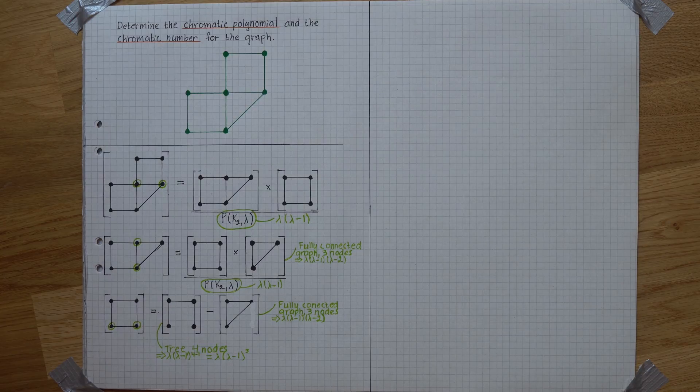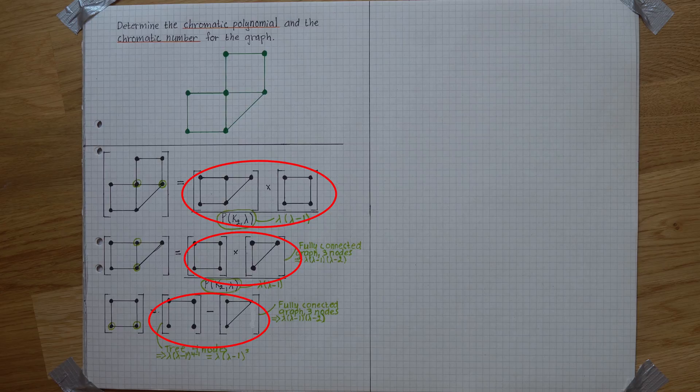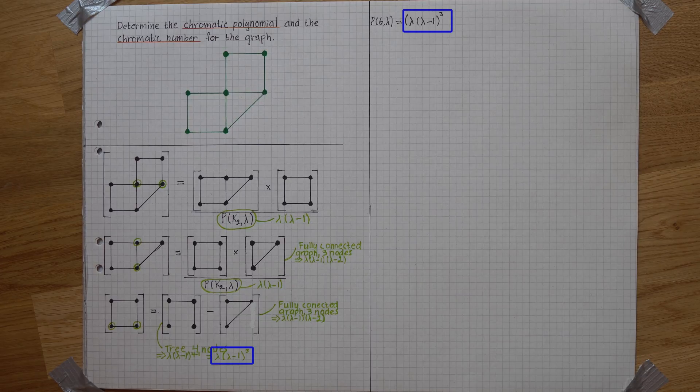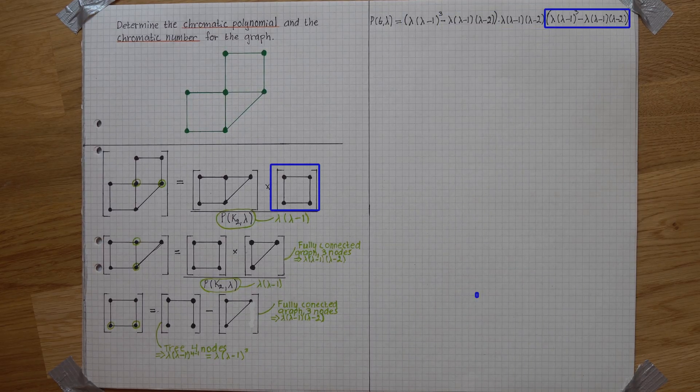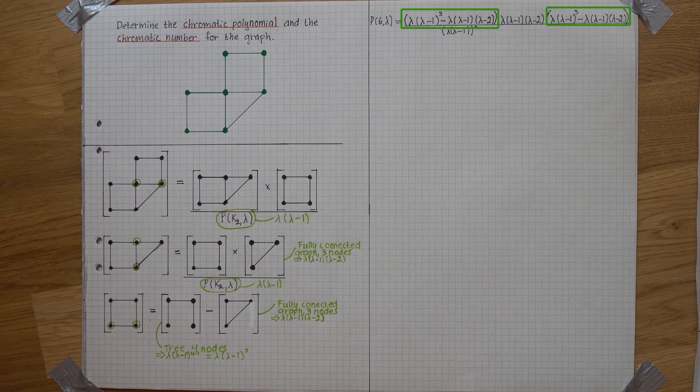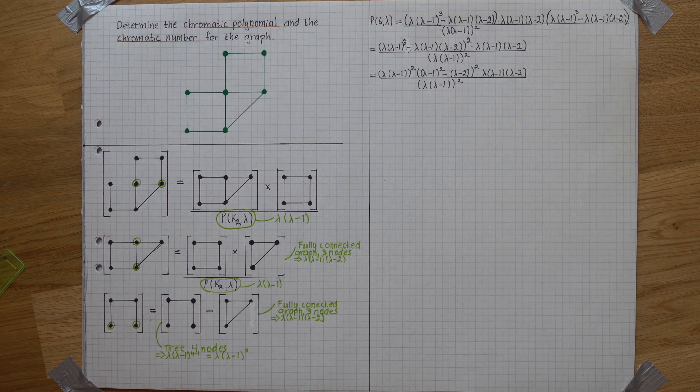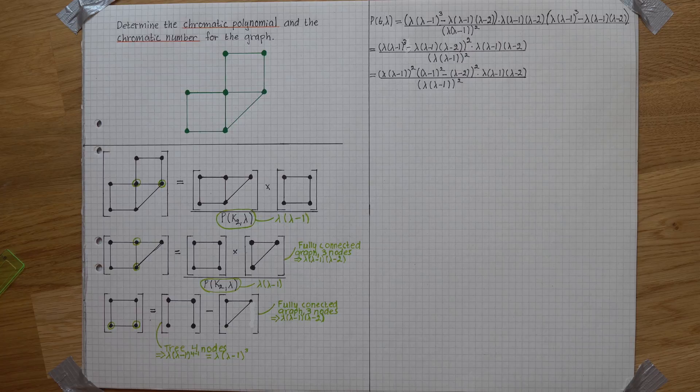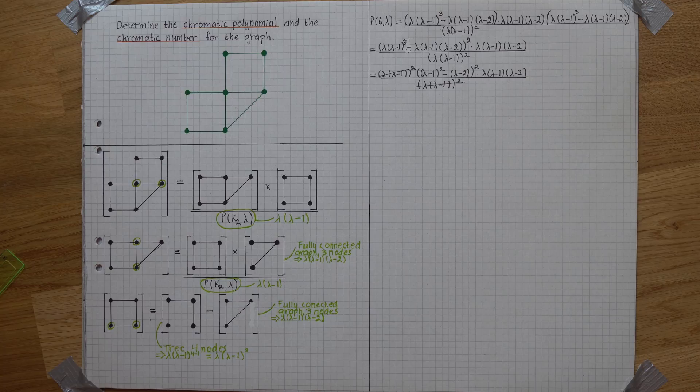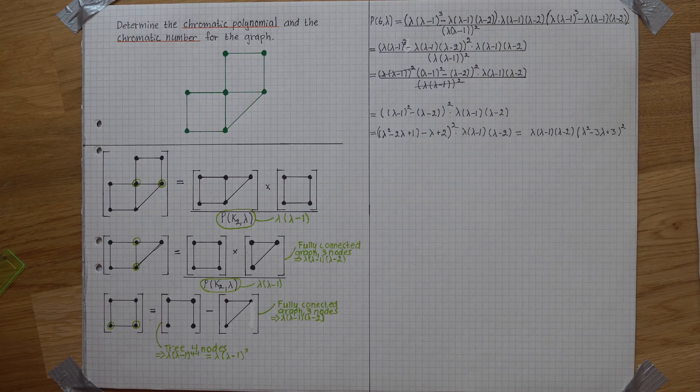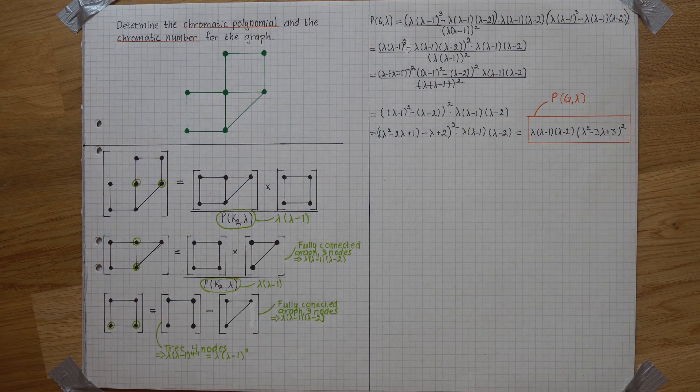We'll now combine the information from the subgraphs to get the chromatic polynomial for the full graph. These two are the same, so we'll combine them with the power of 2. We'll break out λ times λ minus 1 to the power of 2 so that we can get rid of the division. And with some more basic algebra, we eventually get the chromatic polynomial that we've been looking for.